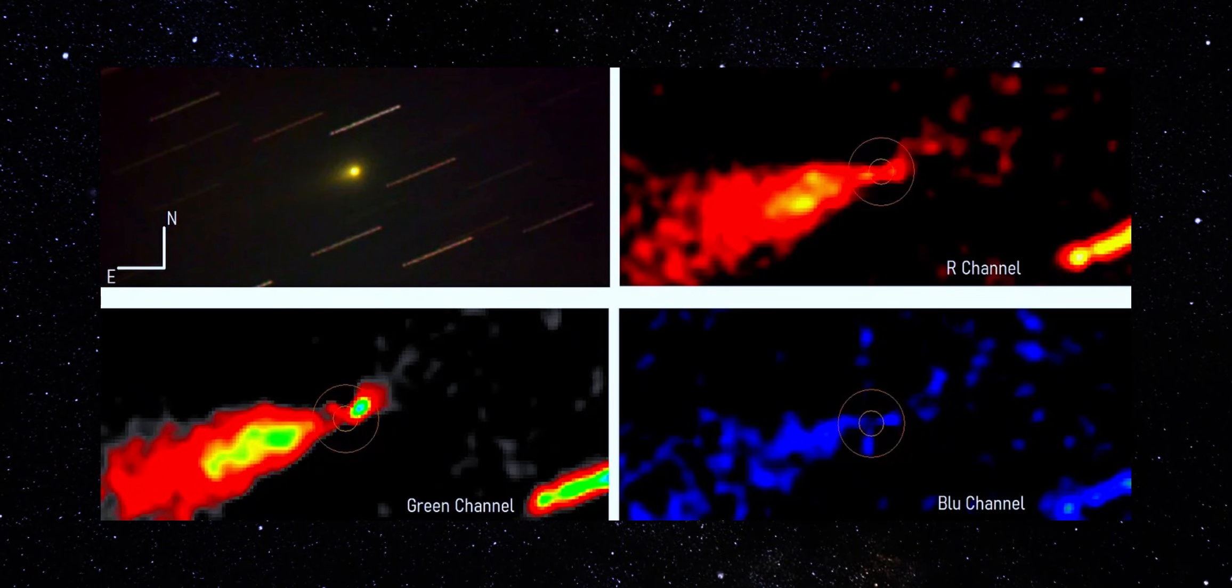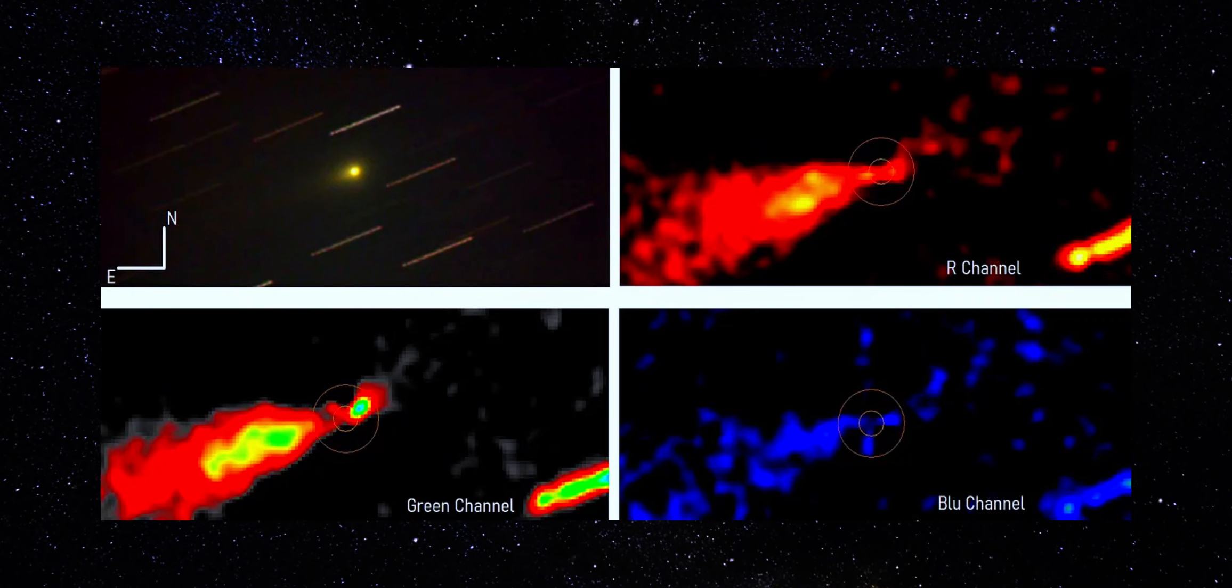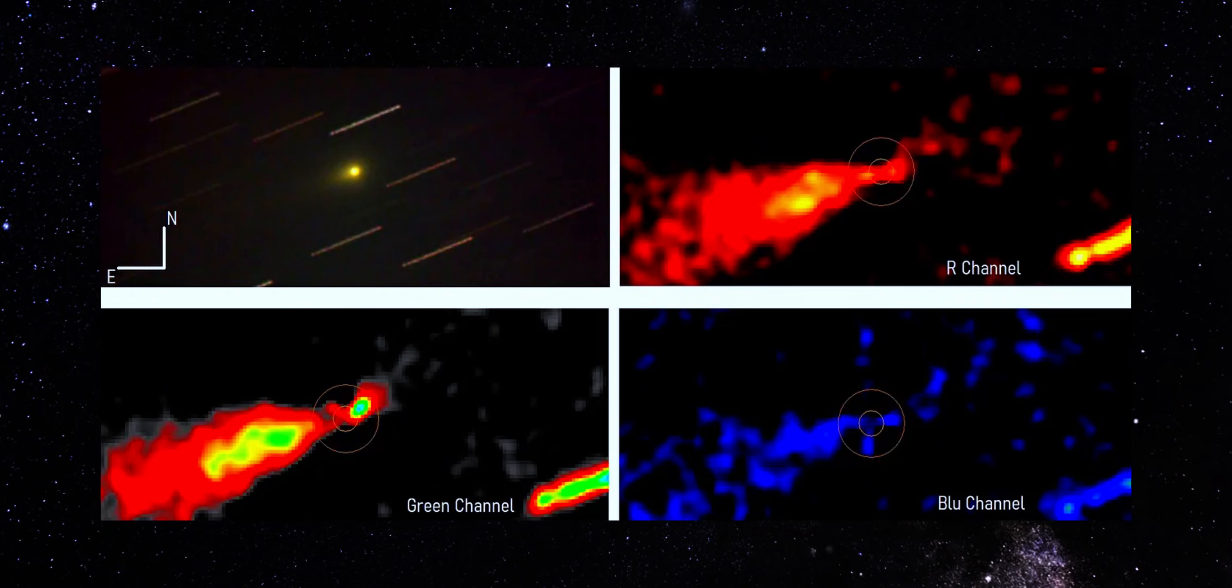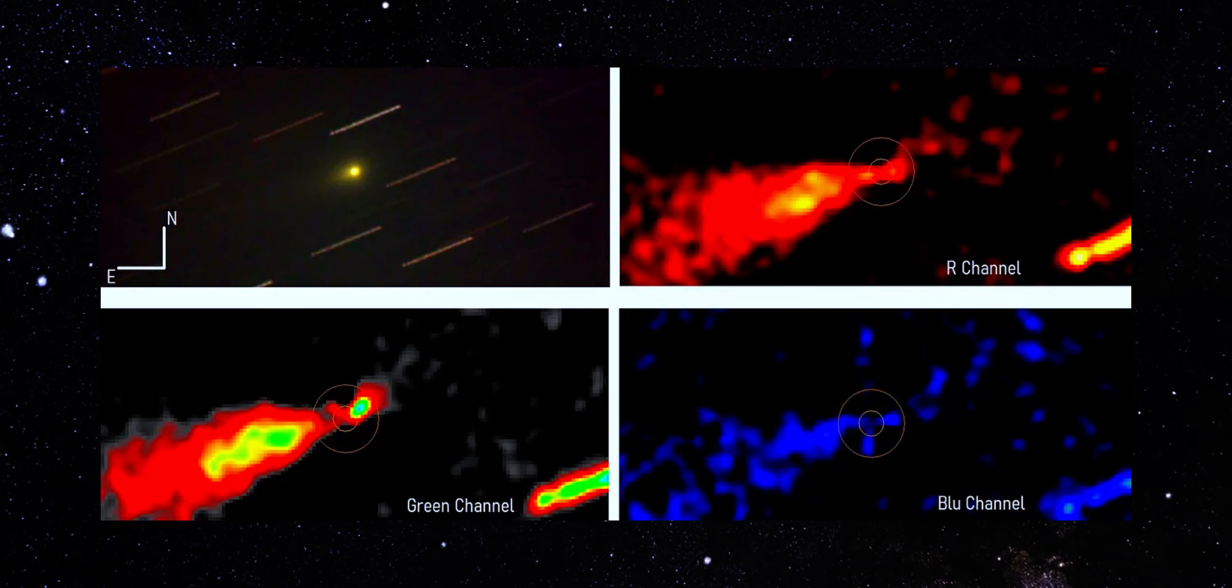Switch to the green channel. Different wavelength band. Different noise profile. Yet the same feature reappears. Same origin point. Same direction. The intensity changes as expected, but the geometry stays locked. That's critical.